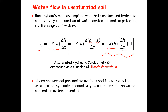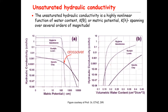Here, K(H) is the unsaturated hydraulic conductivity and lowercase h is matric potential. There are several parametric models that can be used to describe unsaturated hydraulic conductivity as a function of matric potential or water content. If you plot unsaturated hydraulic conductivity versus matric potential or volumetric water content, you get curves where the first curve is for sandy-type material like sandstone, the second is for loam, and the third is for clay-type material.